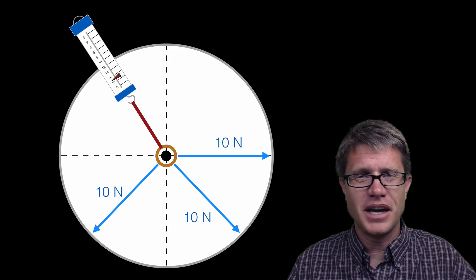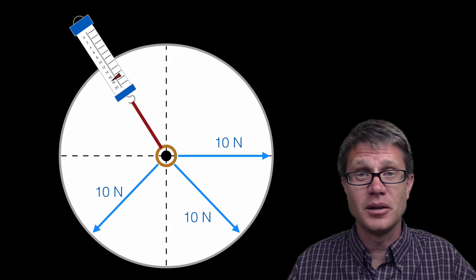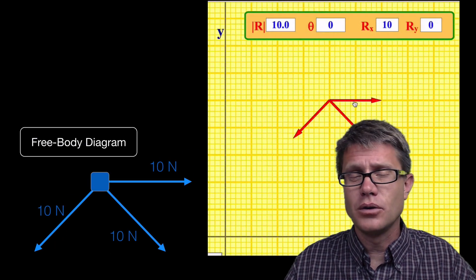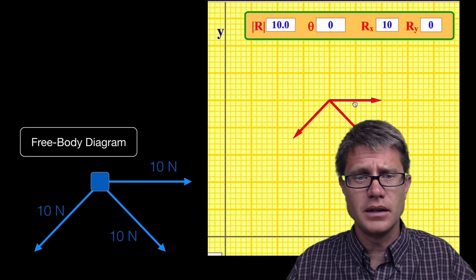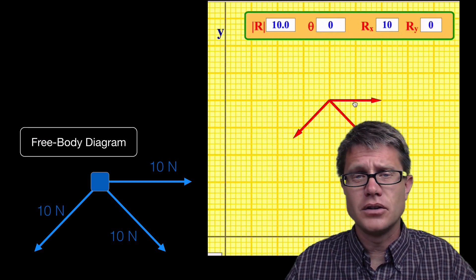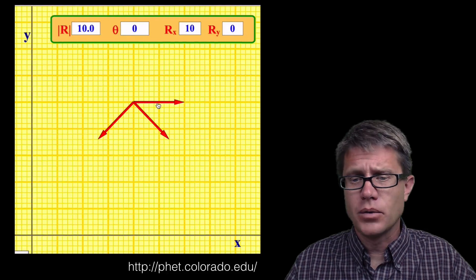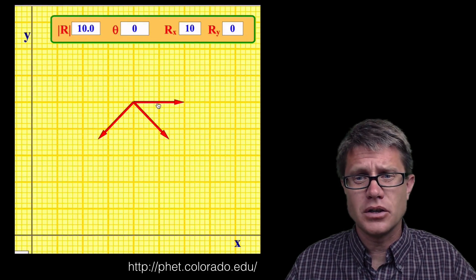Now if you do not have a force table and you cannot figure that out you are going to have to do a little bit of physics. And so we can do a free body diagram, all of the forces acting on that ring in this case. And then I am going to have to do a vector sum. And so we are going to use a PHET simulation to show you how that works.